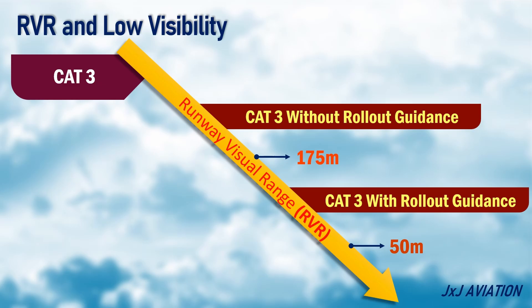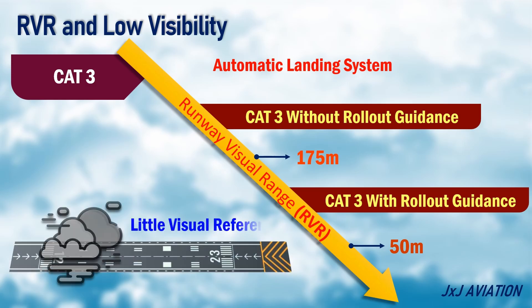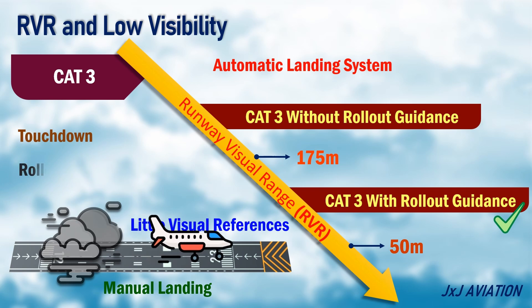For CAT-3 operations, an aircraft should have an automatic landing system. This is because there would be very little visual references available for a manual landing due to the weather conditions. If an aircraft has Autoland with rollout, the Autoland system would guide the aircraft through touchdown and rollout until the aircraft decelerates to a safe taxi speed.